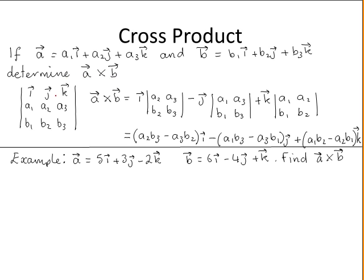This is done by setting up a 3 by 3 matrix and finding its determinant. The first row in the matrix is i, j, k. The second row is the coefficients of the first vector in the cross product, which is vector A — its coefficients are A1, A2, and A3. The third row is the coefficients of the second vector, vector B — its coefficients are B1, B2, and B3.